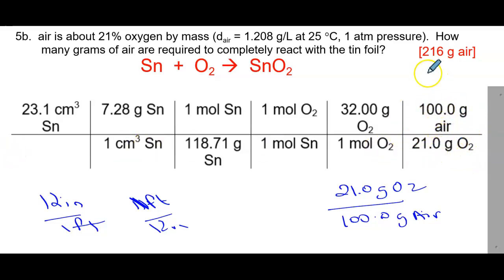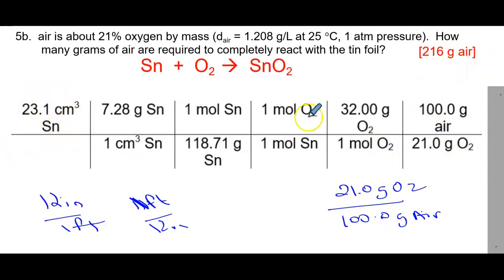When I do all that math, the answer is 216 grams of air with three significant figures. The reason we use three sig figs is that 23.1 is the smallest number of sig figs in the problem. In your homework or practice, I'll be looking for decimal places.